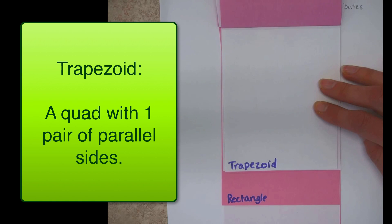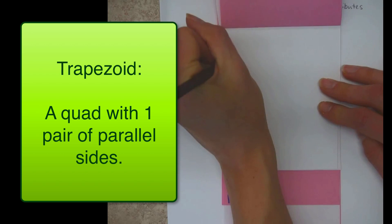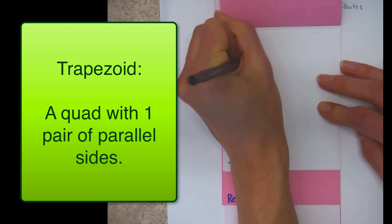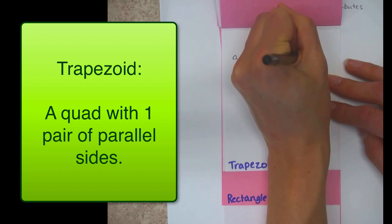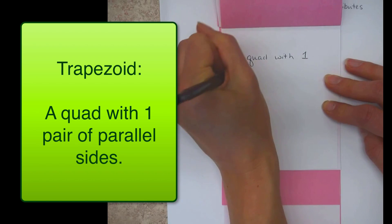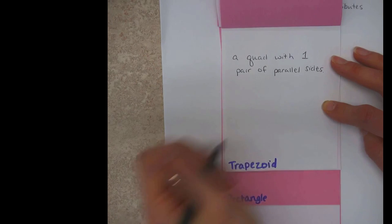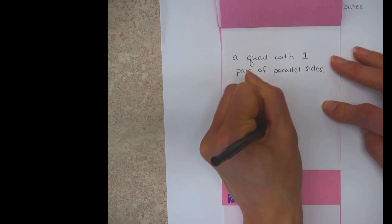And a trapezoid is a quad with exactly one pair of parallel sides. So a parallelogram has two pairs of parallel sides. A trapezoid has one pair. Be pretty careful on how you draw them. This is my favorite trapezoid shape. I'll show you.